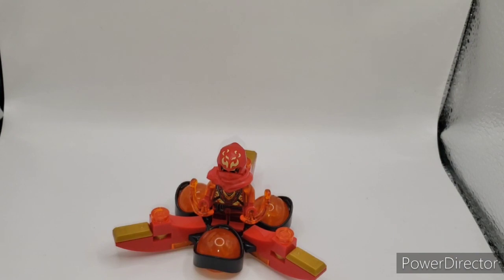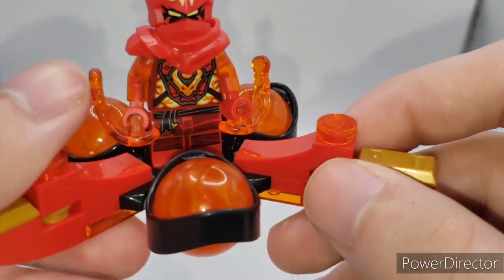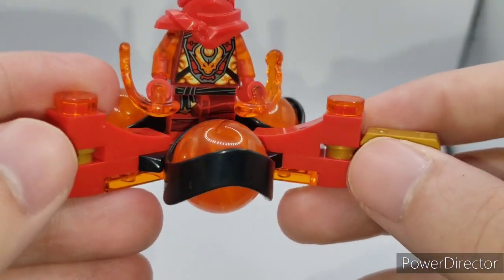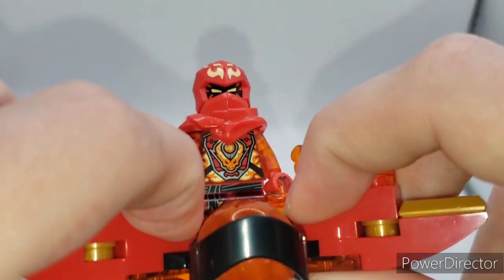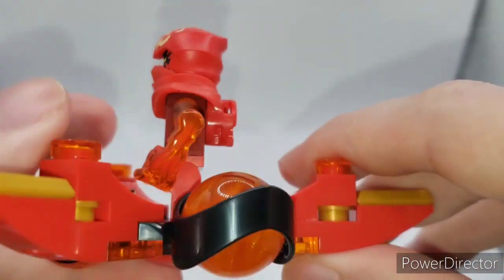Alright, next off we have here is Kai's Dragon Power Flip. All of this is just made of slopes. Same thing as the other ones, just slope pieces and stud pieces and ingots this time. And it does stay on quite well, but it's not too strong, but it does feel quite nice.